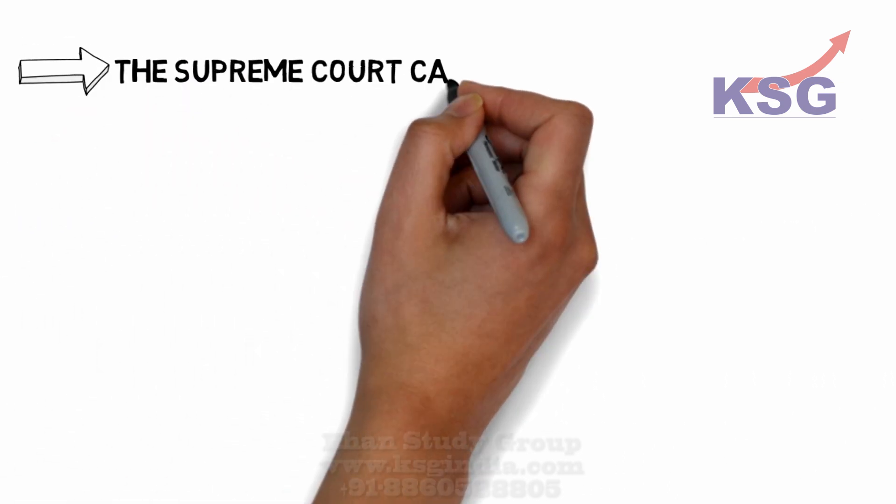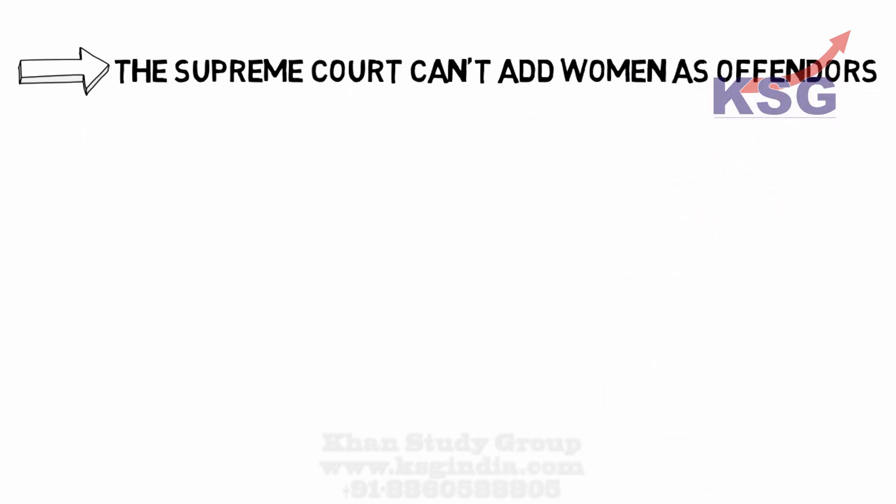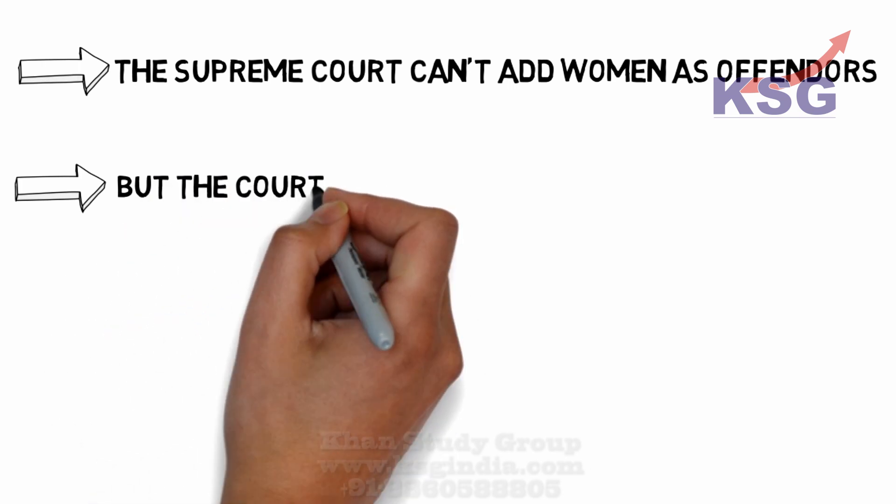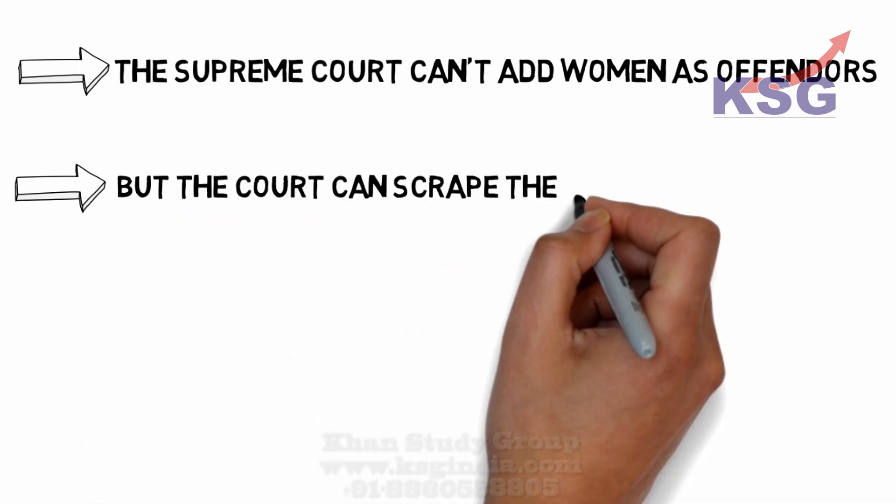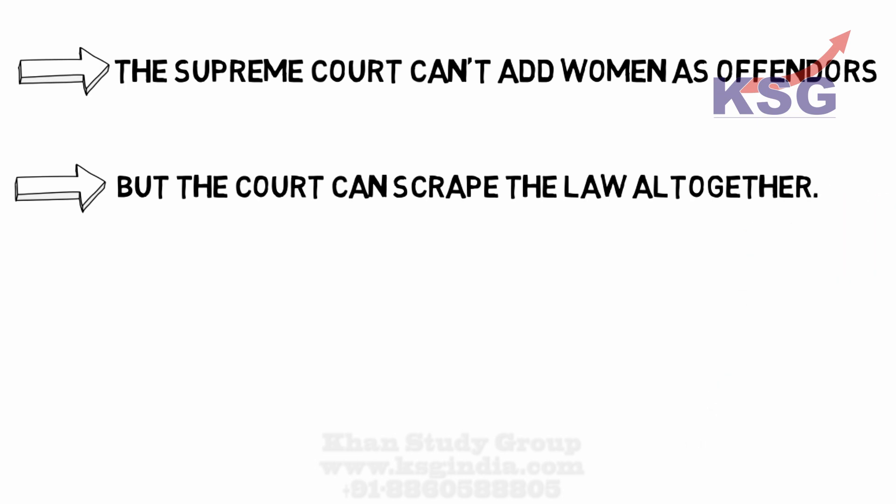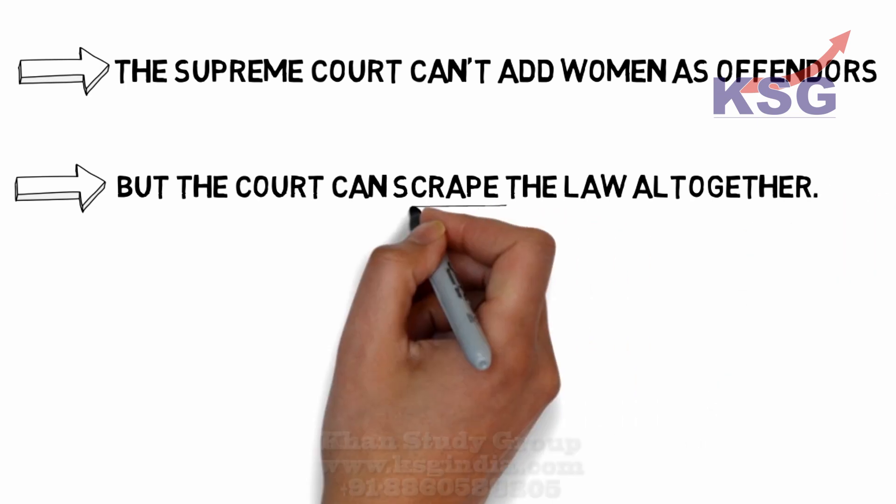We see that the Supreme Court cannot make the offense of adultery gender-neutral by adding women to it. However, it can make it gender-neutral by scraping the law altogether and thus not making it an offense for men as well as women.